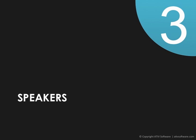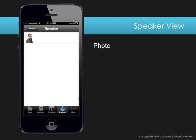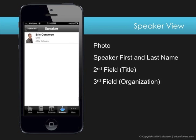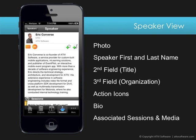The speaker view is as structured as the session view. You can display a photo, which is optional, the speaker first name and last name, then a second and third data field which could include the title and organization, for example. Action items could optionally include an email if an attendee has questions for the speaker, and a URL such as the speaker's Facebook page. Then of course a full bio, and the app automatically adds a list of all the sessions the speaker is presenting.